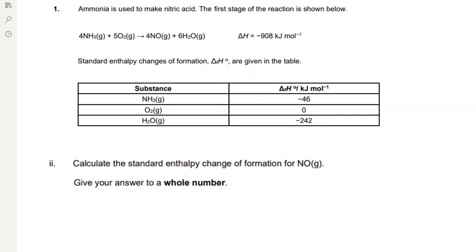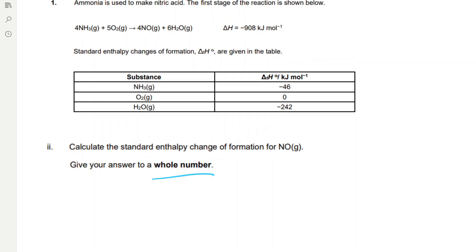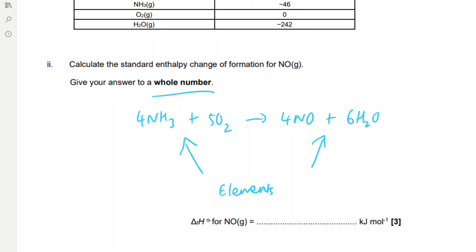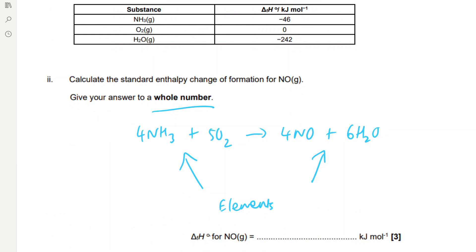Calculate the standard enthalpy change of formation for NO, giving the answer as a whole number. We start by drawing a cycle — since we've been given enthalpy change of formation values, the arrows need to go upwards. We label the enthalpy change of reaction as minus 908 kJ/mol. For the left arrow we multiply minus 46 by 4 because we have 4 moles of ammonia; oxygen is an element so it has no enthalpy change of formation. On the right we have 6 moles of water: 6 times minus 242, plus 4 times the enthalpy change of formation of NO, which is our unknown x. So minus 46 × 4 = minus 184, and 6 × minus 242 = minus 1452.